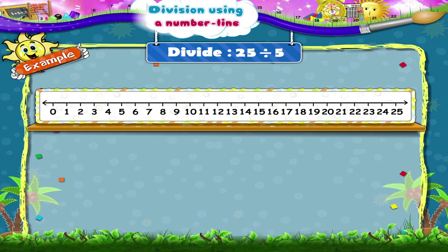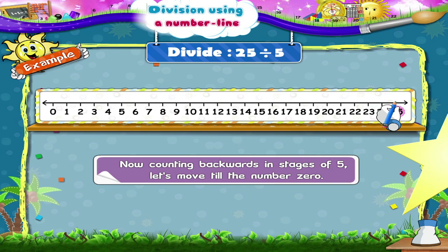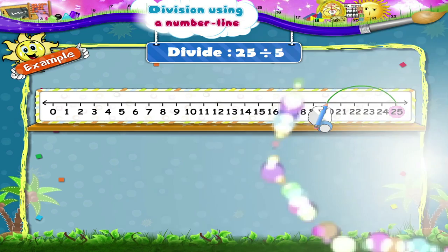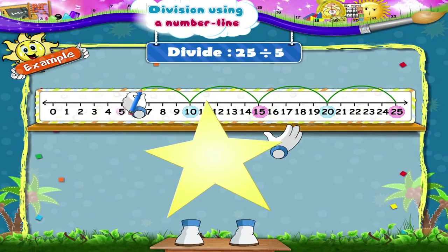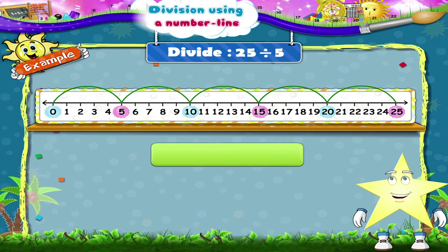We shall keep the pencil on the number 25. Now counting backwards in stages of 5, let's move till the number 0. We have gone from the number 25 to 20 to 15, 10, 5 and 0 in 5 steps. Hence, 25 divided by 5 is equal to 5.